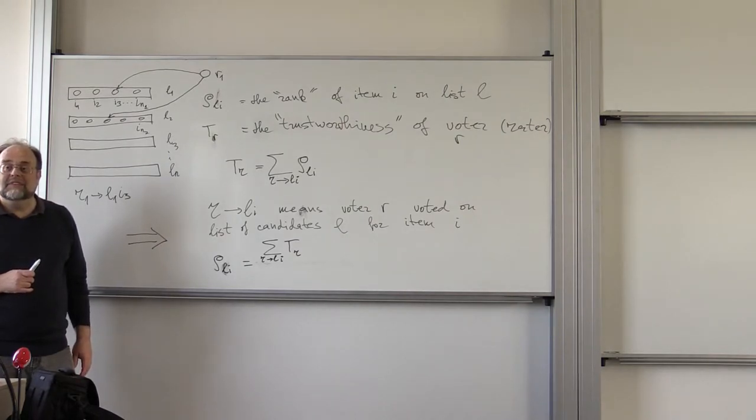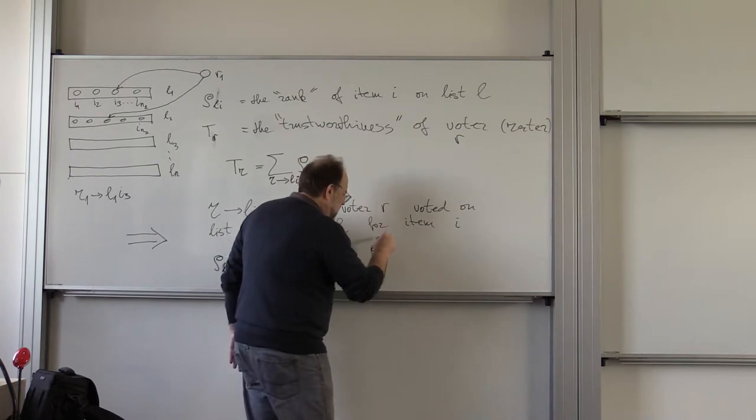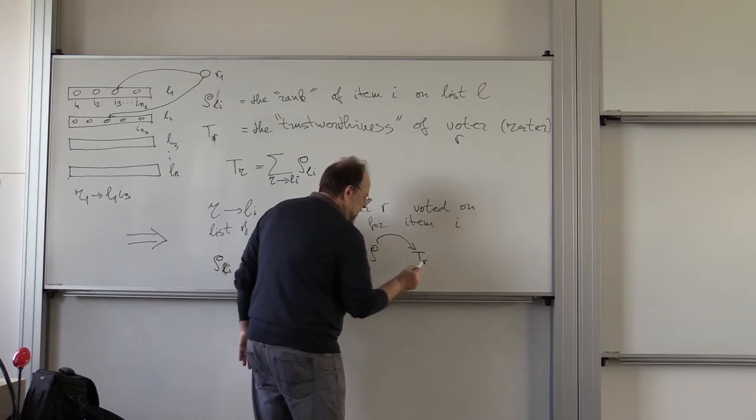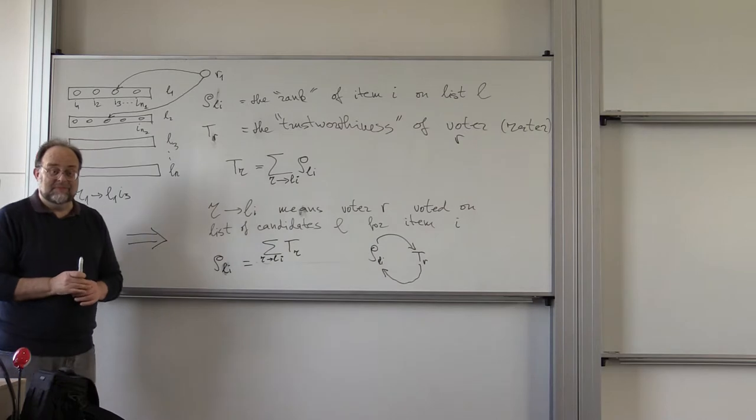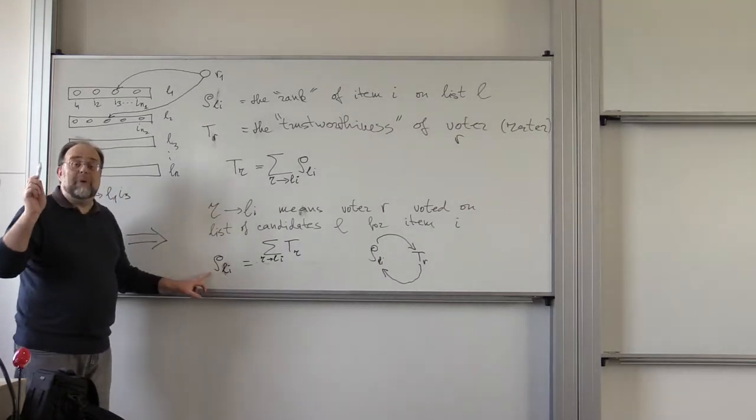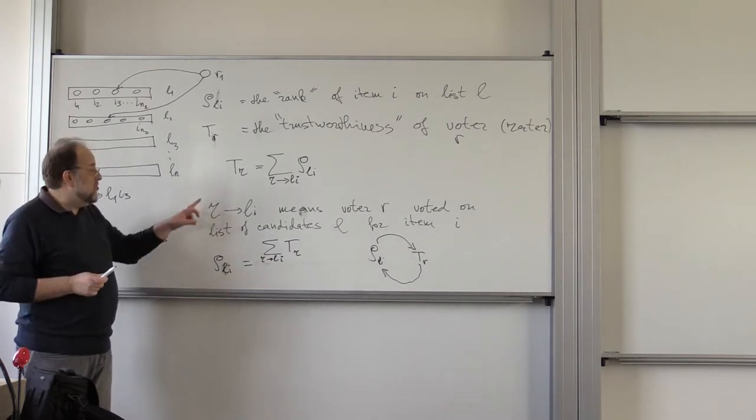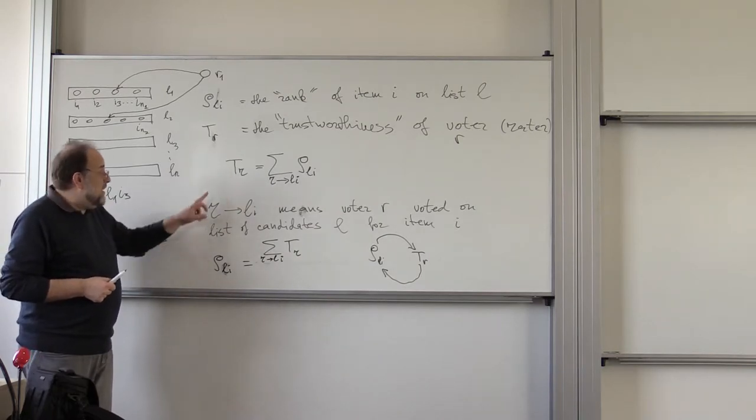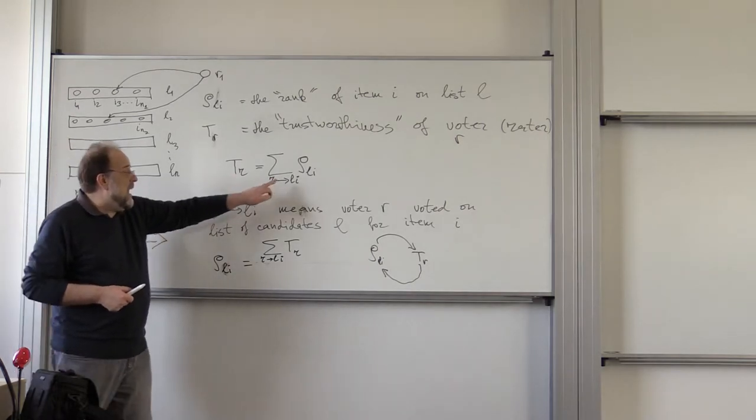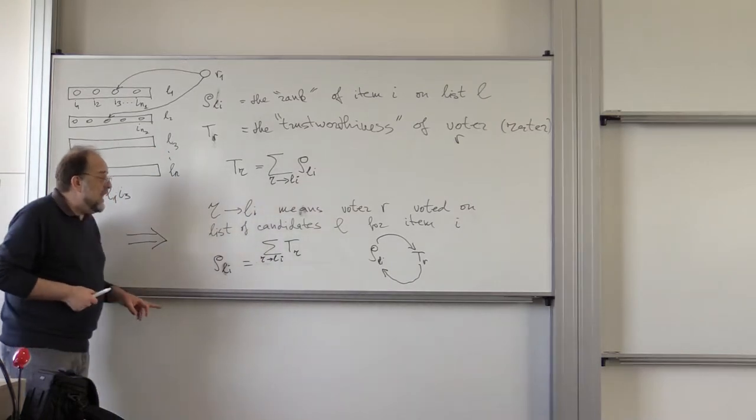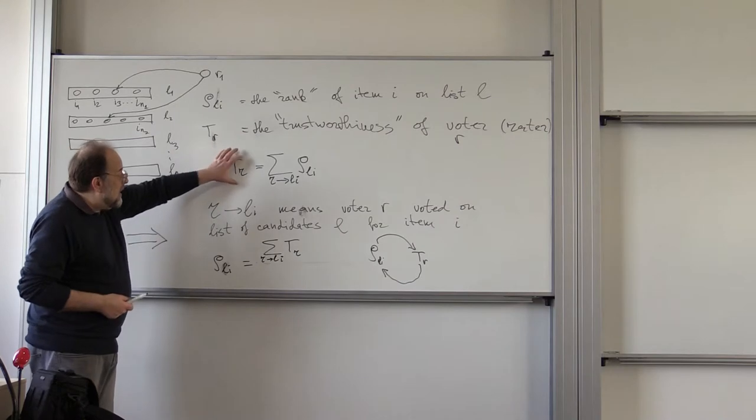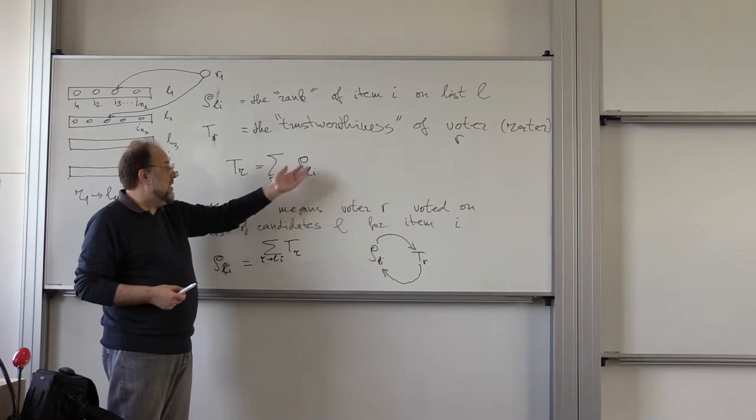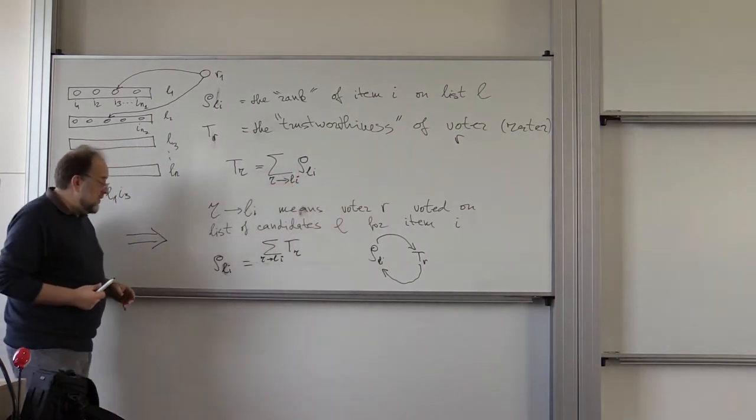Just in this form, this is not a way to compute. Because what's the problem with this definition? Why these two equations are not enough to compute the ranks and trustworthiness? Each of them is dependent on the other equation. Exactly. It's a vicious circle. Ranks depend on trustworthiness of raters. But trustworthiness of raters also influences the ranks. So this is just like in Google PageRank. It's absolutely identical situation. Just like in Google PageRank, these are just system of equations in variables tr and rho_Li that we would like our system to satisfy.